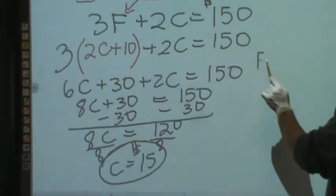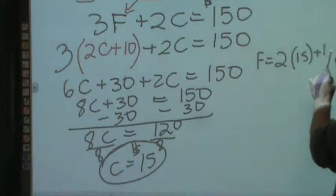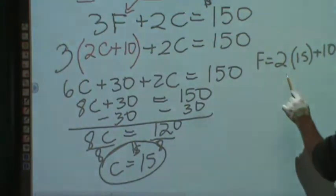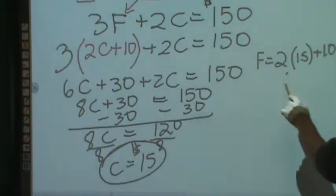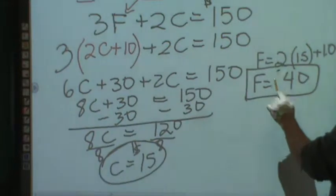Well, flowers cost two boxes of chocolate plus 10. So 30 plus 10 is $40. A bouquet of flowers would cost $40.